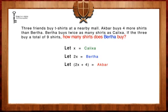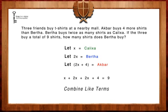In order to find out how many shirts Bertha bought, we're going to add up our let statements and set them equal to 9, the total amount of shirts they bought together. Our equation reads: X plus 2x plus 2x plus 4 equals 9. Next, we combine like terms — X, 2x, and 2x — by adding them together. Our equation now reads: 5x plus 4 equals 9.